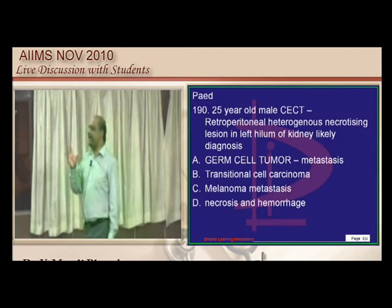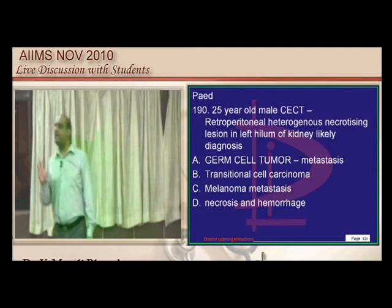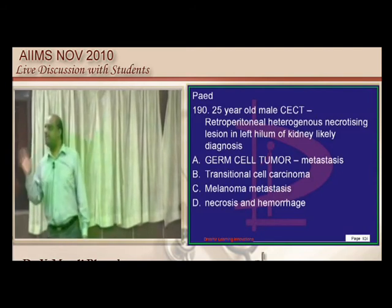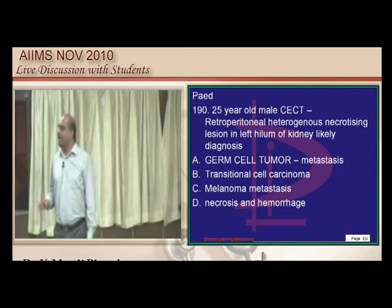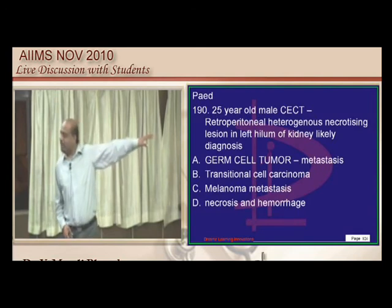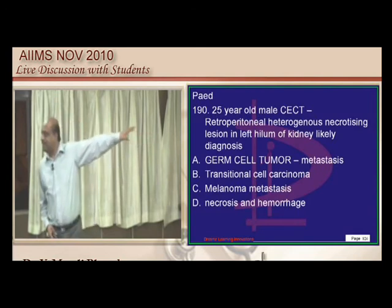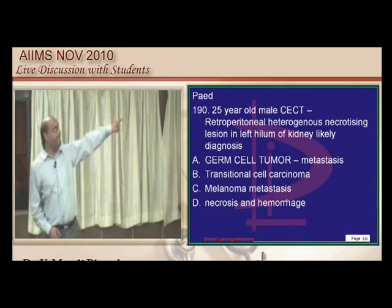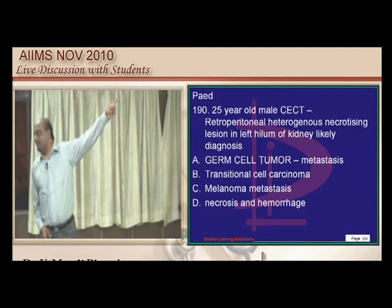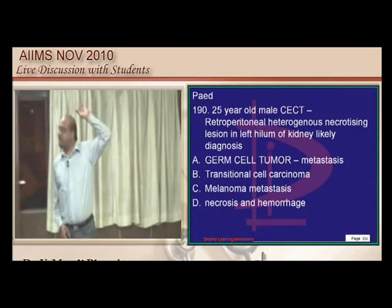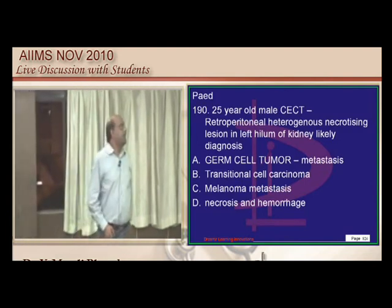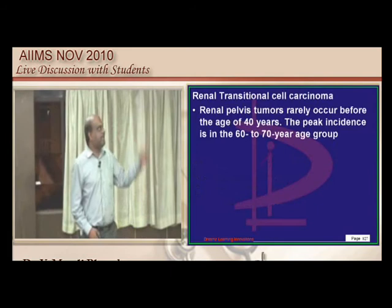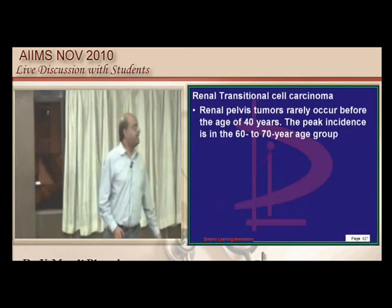A perihilar heterogeneous renal mass on CECT: for transitional cell carcinoma of the renal pelvis, age 25 is too young — the typical age is 40 to 60 years.